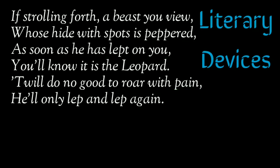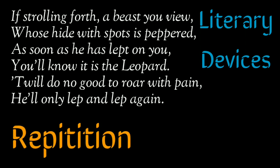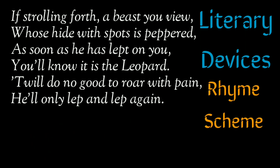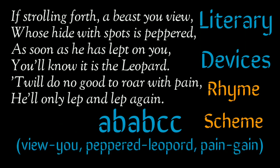Regarding the literary devices in stanza 3: the poet has used poetic license by changing the spellings of 'leapt' and 'leap' into 'leapt' and 'lep.' The poet has also used repetition in the line 'he'll only leap and leap again' to emphasize how a leopard leaps upon its prey. The rhyme scheme is A B A B C C.